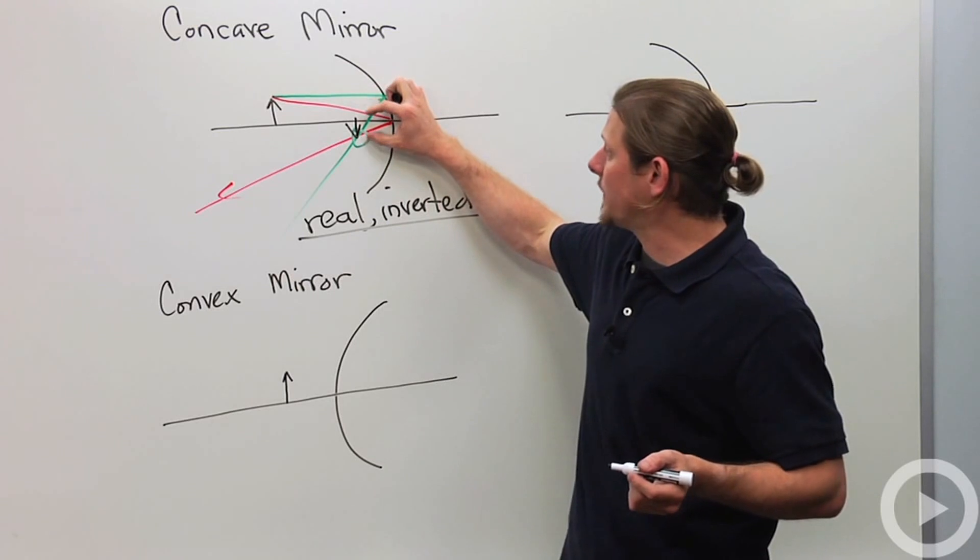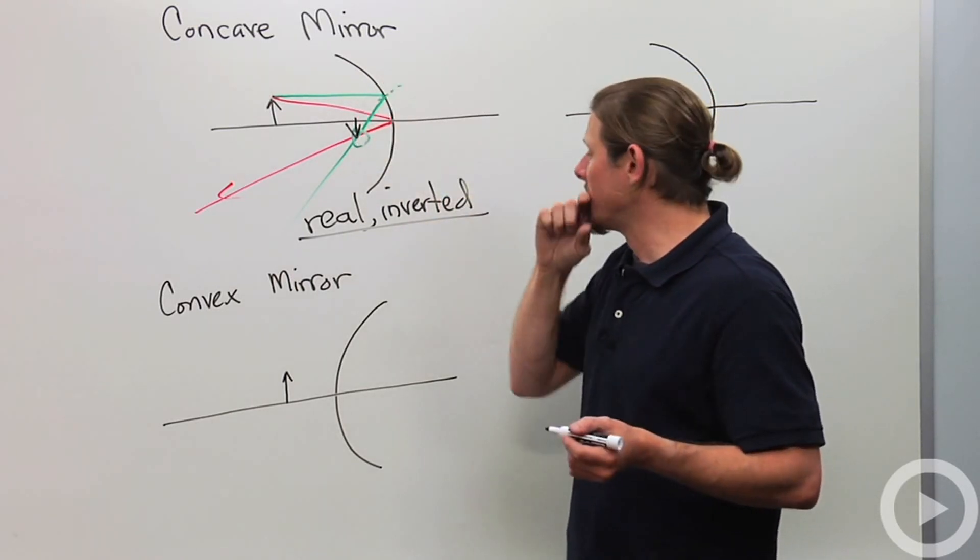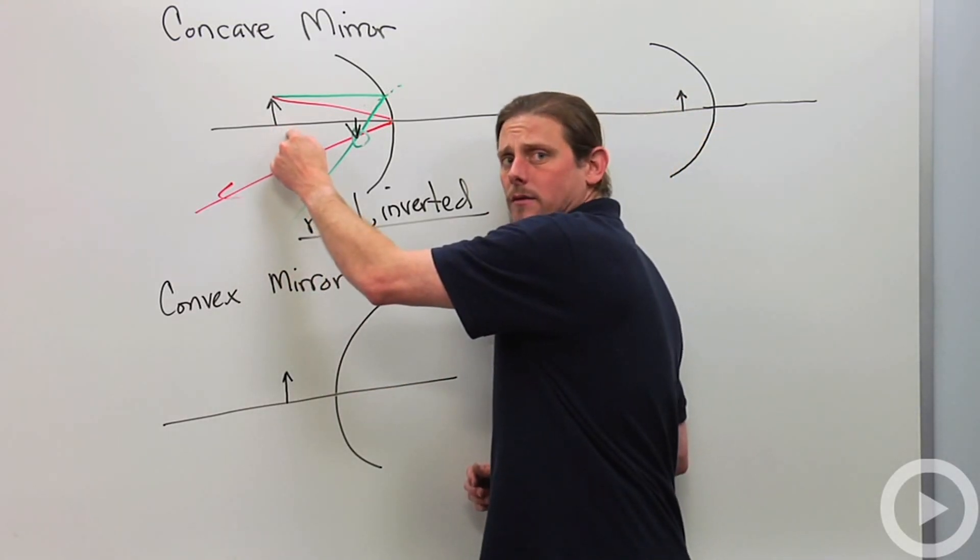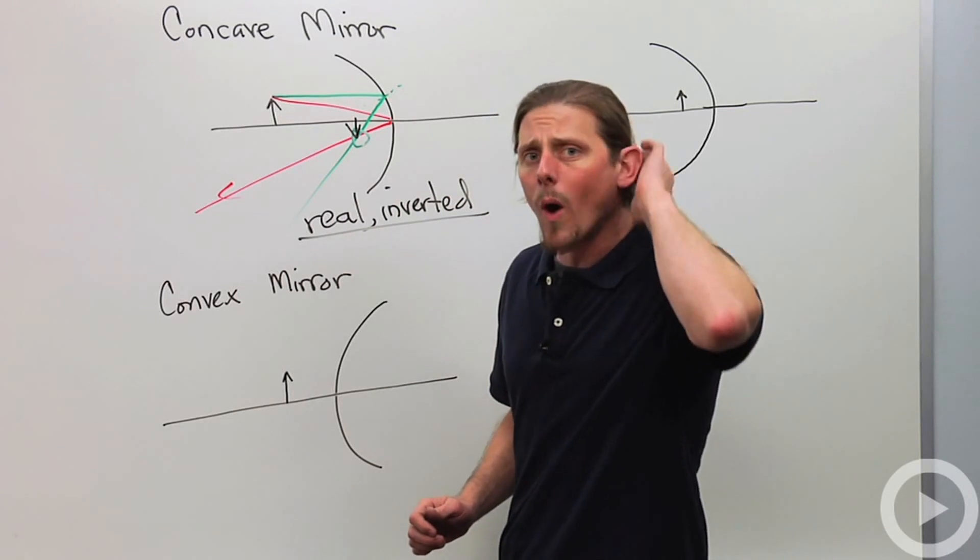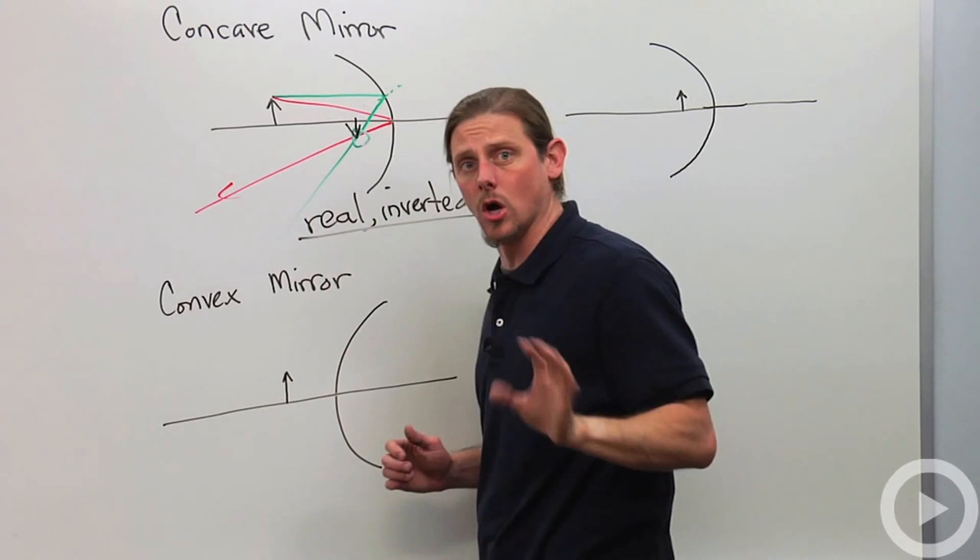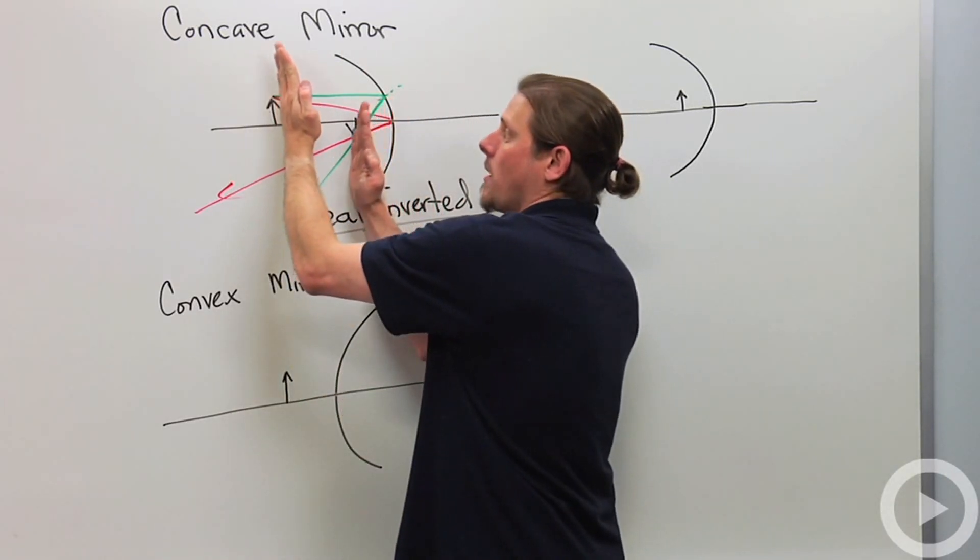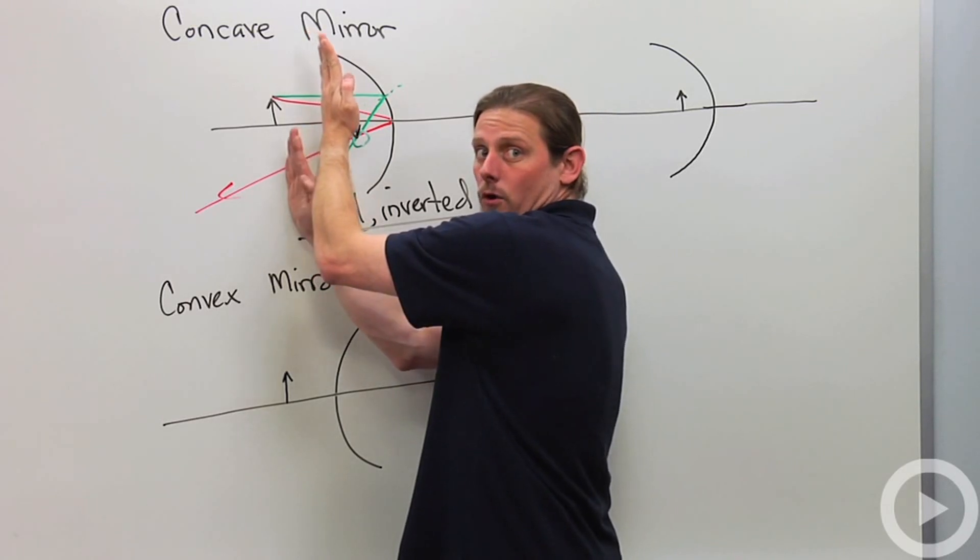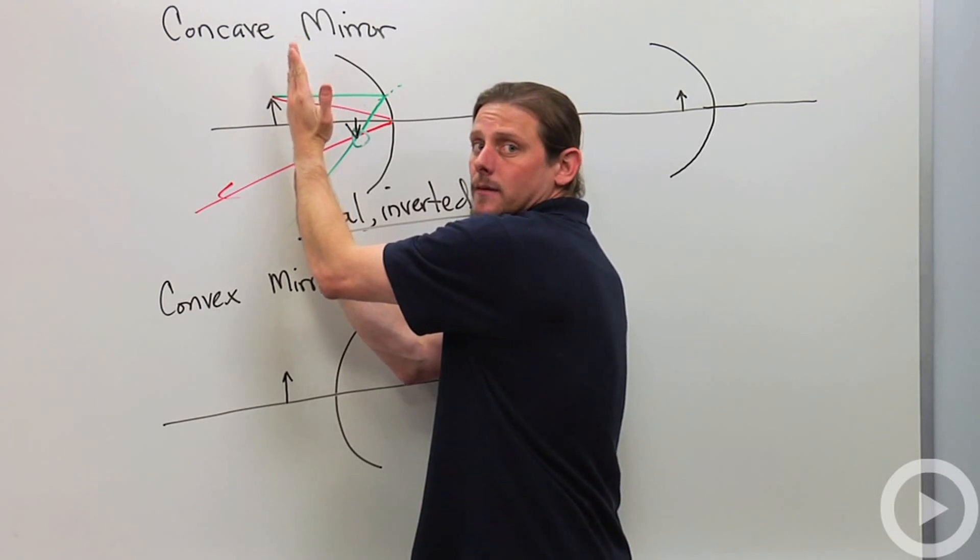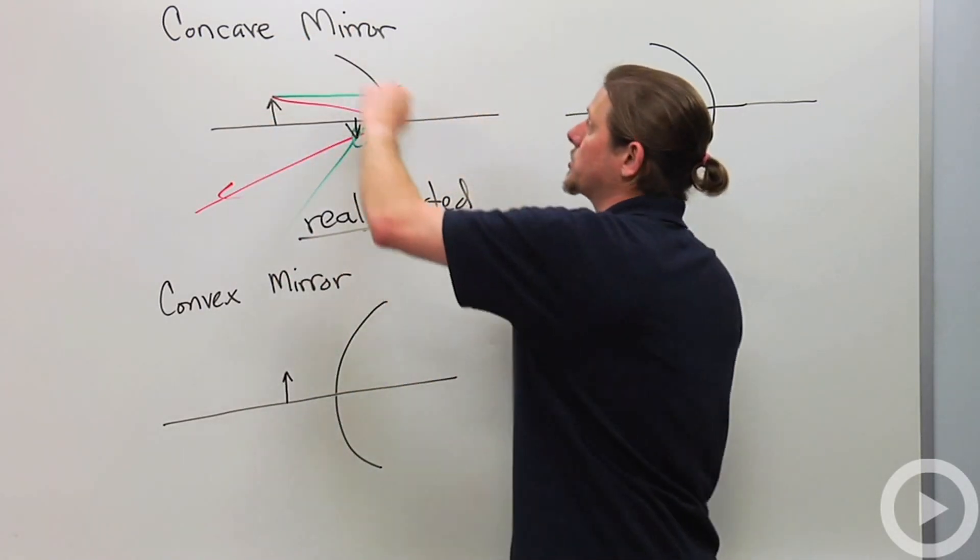So this gives us a real image. But notice that the real image is inverted. So this is going to give me real inverted image. It's going to be closer. The magnification will be less than one. And so this is what happens.